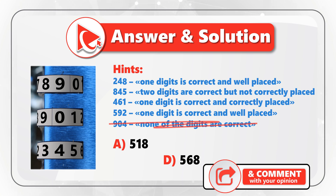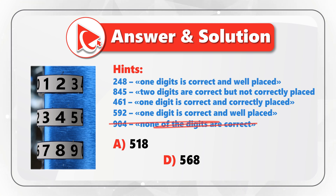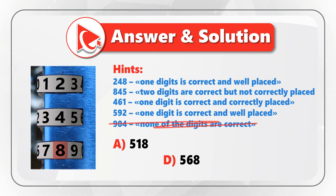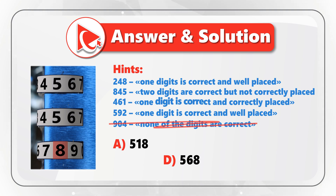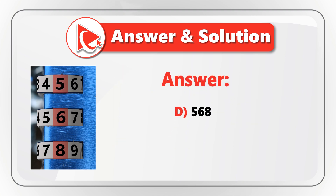Looking through the remaining hints: in hint 1, digits 2, 4, 8 — only digit 8 is correctly placed. In hint 2, digits 8 and 5 are correct but not correctly placed. In hint 3, only digit 6 is correct and correctly placed. And in hint 4, digit 5 is correct and well placed. Based on this, the correct answer is choice D — 5, 6, 8.